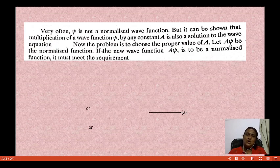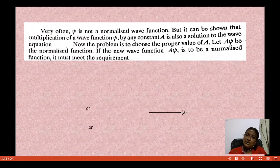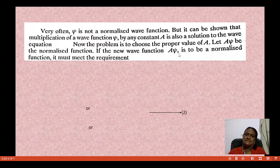We will study the wave equation with constant A. The problem is choosing the proper value of A. Let A times psi be the normalized function. Psi is a normalized wave function when multiplied by a constant. We will see the eigenvalue function. If a new wave function equals a constant multiplied by psi, it adds a new function, and this new function is known as a normalized wave function.